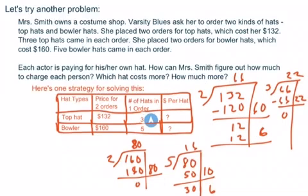But there were three hats in each of those orders. So, I'm going to divide the 66 by 3. That's, I know 3 times 2 is 6. That made it 3 times 22 is 66. So, $22 per hat for the top hats.